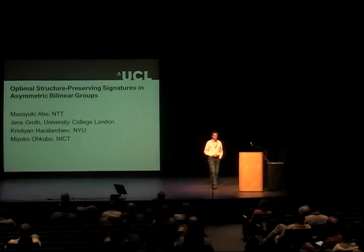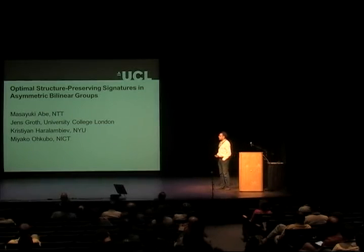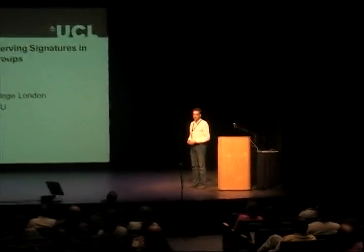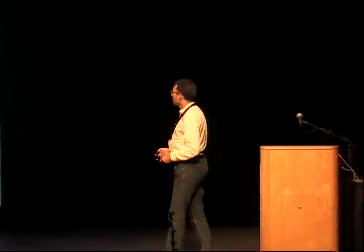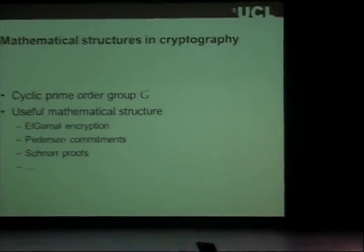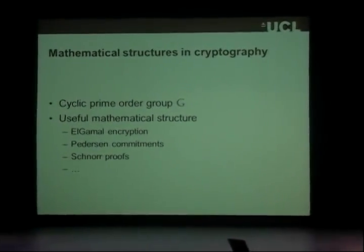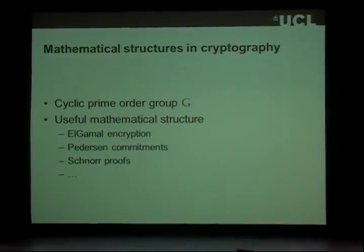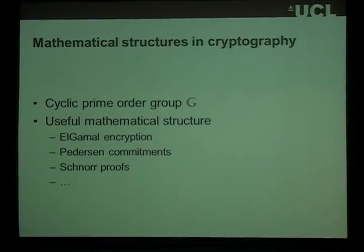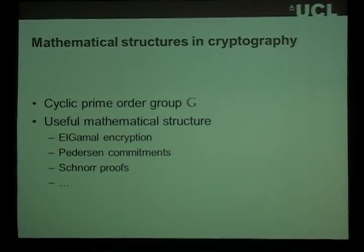This is about structure-preserving signatures, which is a special type of pairing-based signature schemes. I want to start by talking about structure-preservation, which is something we're already very familiar with in cryptography. If you think about a mathematical structure such as a finite cyclic group, it's proven to be extremely helpful in constructing cryptographic protocols. We have things such as ElGamal encryption, Pedersen commitments, Schnorr proofs, and so forth.